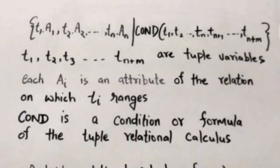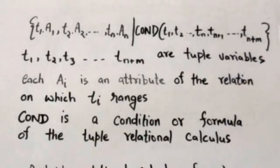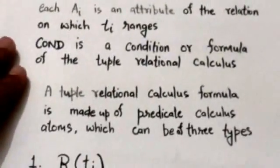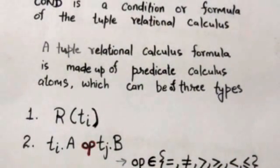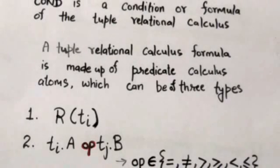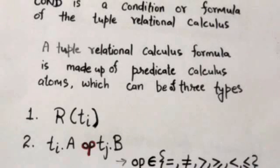Now we will study about the condition or formula of the tuple relational calculus. A tuple relational calculus formula is made up of predicate calculus atoms, which can be of three types.